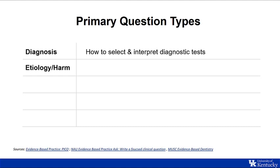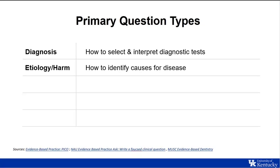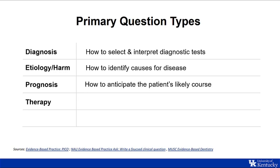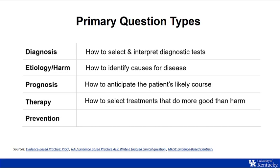The next question type is etiology or harm. These questions address the cause or origin of a disease — the factors that produce or predispose a certain person to a disease or disorder. The third question type is prognosis: how to anticipate the patient's likely course over time and anticipate any likely complications of the disease. Therapy questions focus on how to select the best treatment. The final question type is prevention, which includes screening and reducing the chance of a disease by identifying and modifying lifestyle or risk factors.